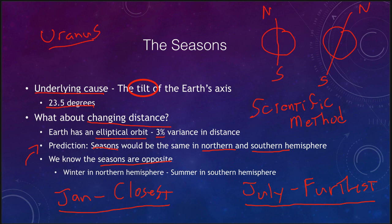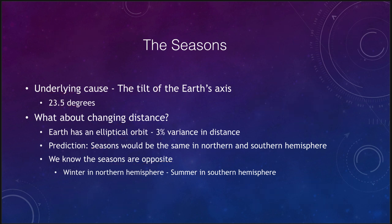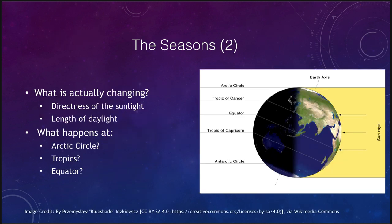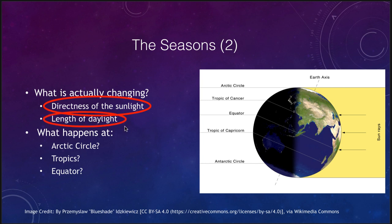In reality, we know that the seasons are caused by the tilt of the earth's axis. The earth's axis isn't changing, but as the earth moves around the sun, two things change: the directness of the sunlight — it gets hit more or less directly — and the length of the daylight. Not the length of the day, which is always 24 hours, but the amount of daylight we get does change over the course of a year.